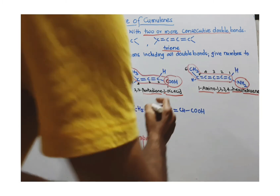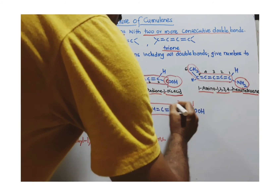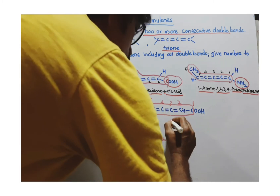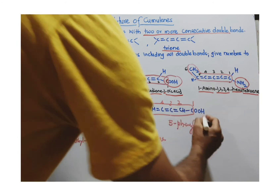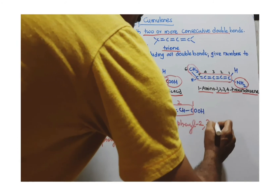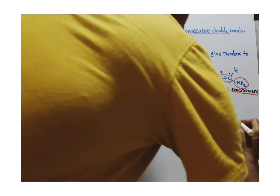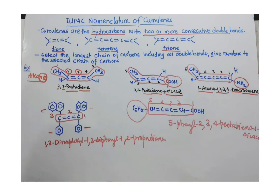In the final example, select the longest chain including the carbon of the COOH group — you cannot skip it. Numbering gives 1, 2, 3, 4, and 5. At the fifth carbon there is a phenyl substituent, so it becomes 5-phenyl. The double bonds start at carbon numbers 2, 3, and 4 — so there are 3 double bonds. The selected chain has 5 carbons, giving 'penta', and with 3 double bonds it becomes 'pentatriene'. There is also a COOH group, making it a 1-oic acid. So the name is 5-phenyl-2,3,4-pentatrienoic acid.